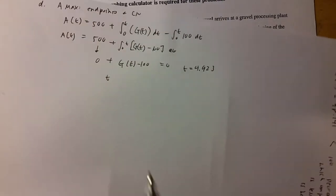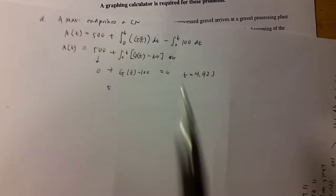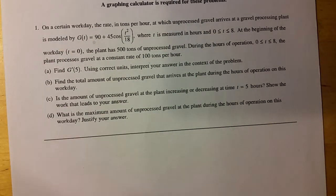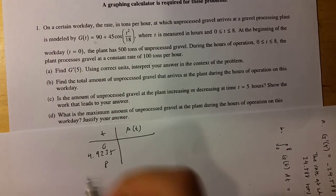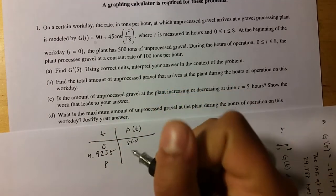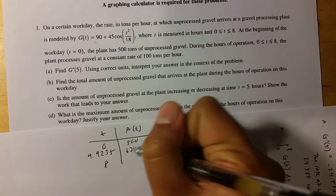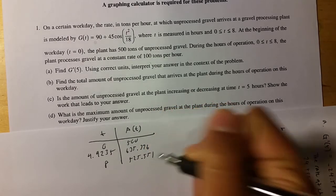And then remember your function A of T? It was this crazy thing we came up with, this function here. So you just plug that in with your calculator and then you should be able to find that, at zero, you know, it's 500 because it says in the question. Here it's 635.376 and here it's 525.551 tons.